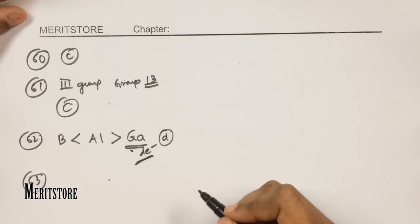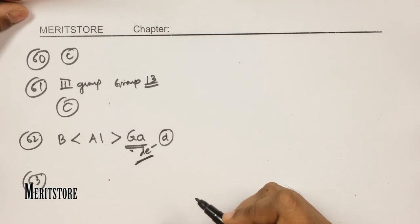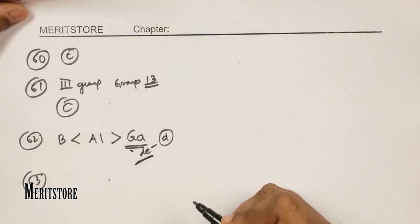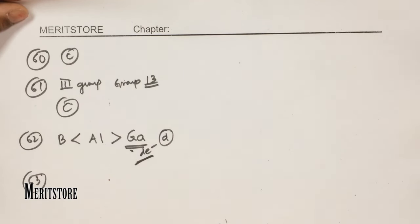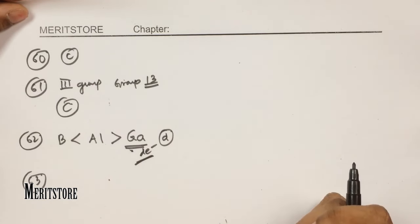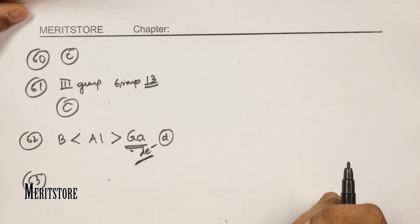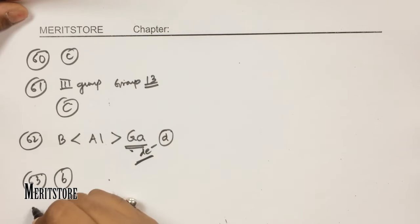Question number 63: which compound is most acidic? The first compound is alcoholic and neutral. The remaining three are phenol derivatives. In phenol, an electron-withdrawing group at the ortho or para position increases acidity. Option B has a nitro group (electron-withdrawing) at the ortho position, making it more acidic than plain phenol. Hence option B.